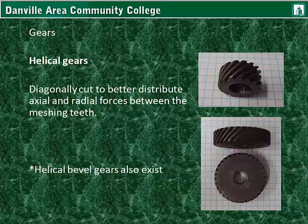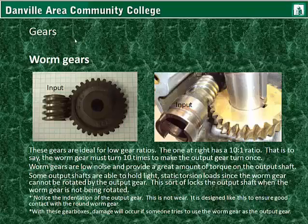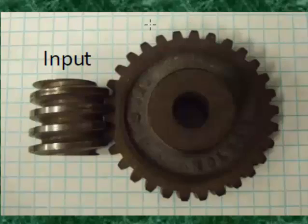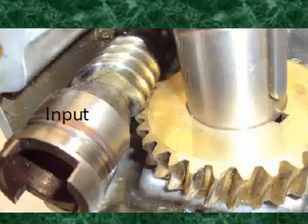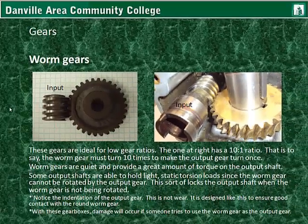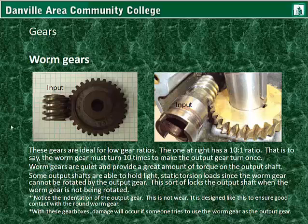Helically cut gears have a special diagonal cut in the teeth to better distribute axial and radial force between them. There are also helical bevel gears. Worm gears: here is the input worm gear and the output gear. These gears are ideal for very low gear ratios — the one shown has a 10 to 1 ratio, meaning the worm gear must turn 10 times to make the output gear turn once. Worm gears are quiet and provide a great amount of torque on the output shaft. Some output shafts can hold light static torsion loads since the worm gear cannot be rotated by the output gear, effectively locking the output shaft in position when the worm gear is not being rotated. Notice the indentation of the output gear — this is not wear; it is designed this way to ensure good contact with the round worm gear.